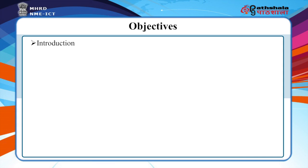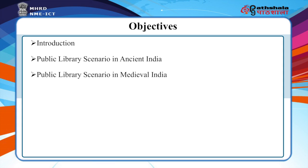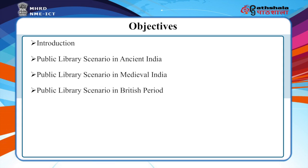The present module 24 is associated with the public library scenario in India, under the paper public library. The paper describes the public library in ancient India, medieval India, British period, and post-independence period.